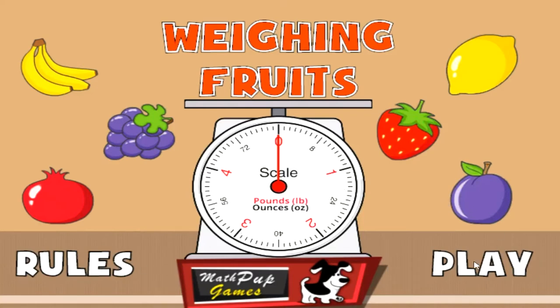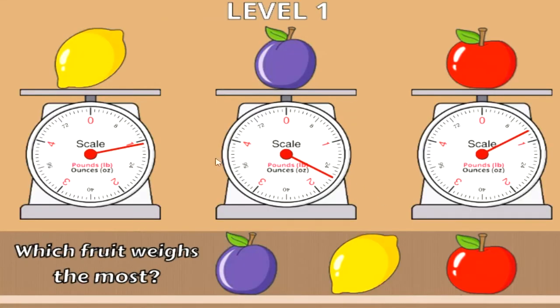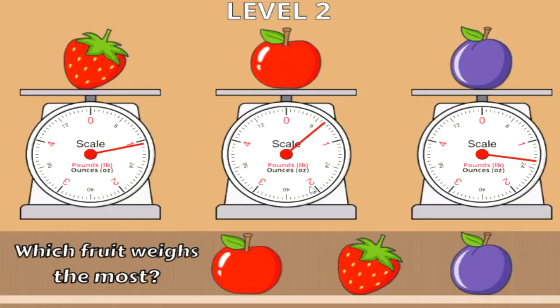Now let's go ahead and click play. The first couple of levels will have one type of fruit on a scale, and so you can see their weights here. It's pretty obvious by looking at this that the plum weighs more than the lemon and the apple. So let's go ahead and click plum, and we'll go into the next level.